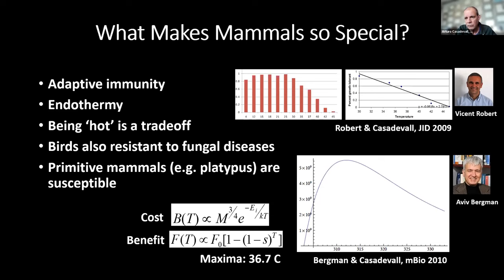In collaboration with Vincent Robert, we analyzed a collection for susceptibility to temperature. Most fungal species do pretty well up to about 30 degrees centigrade, but after that their viability drops dramatically — for every degree between 30 and 42, you can exclude 6% of fungal species. My colleague Abid Bergman took that data and used a formula for how much energy we need to maintain temperature, asking what is the optimal temperature to keep out most fungal species. The maximum was 37 degrees, suggesting our temperature is best adapted for keeping out the fungal kingdom.